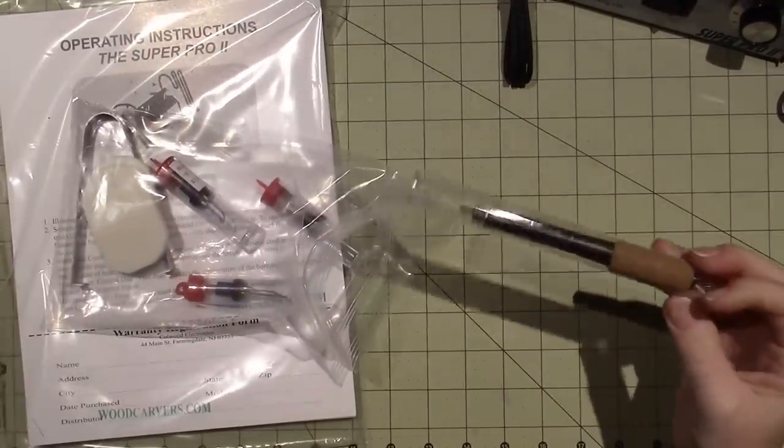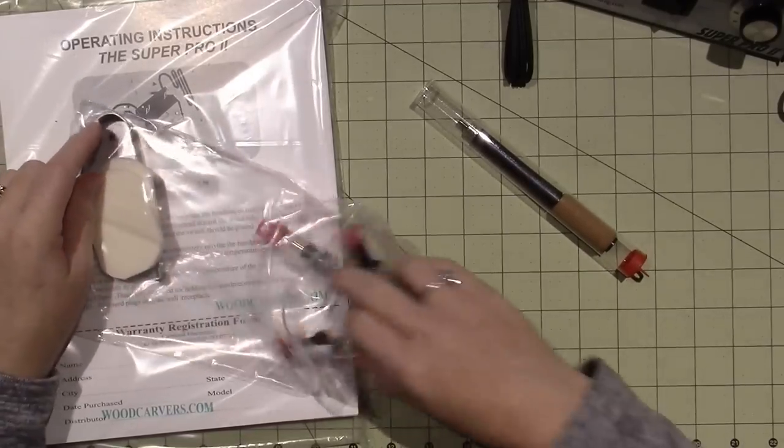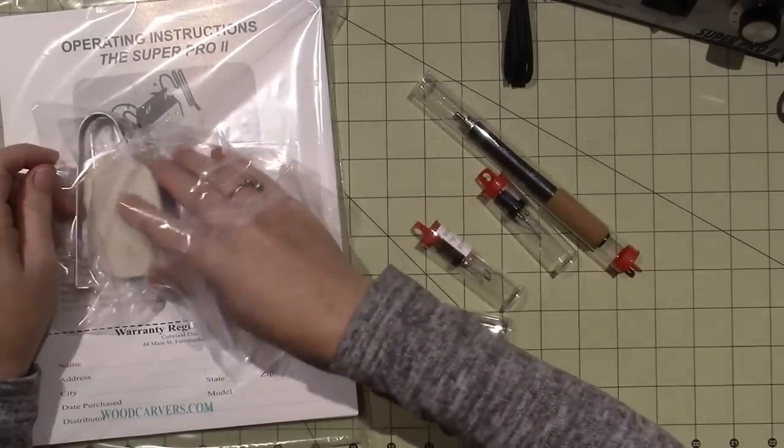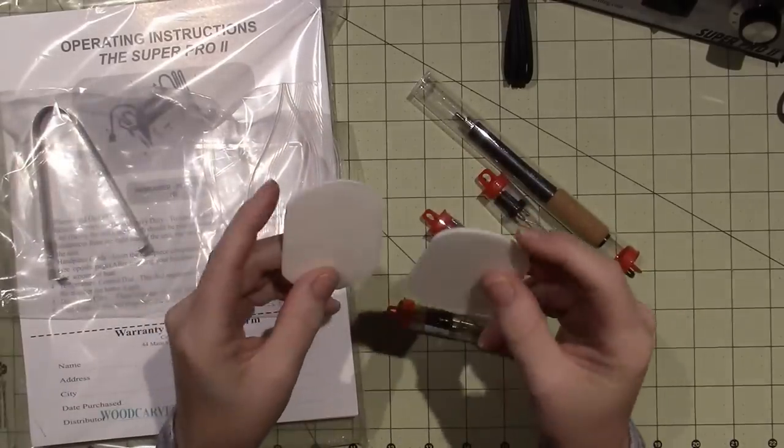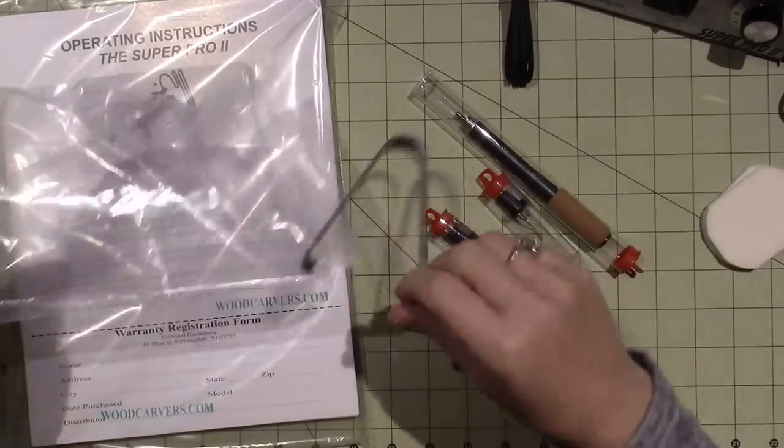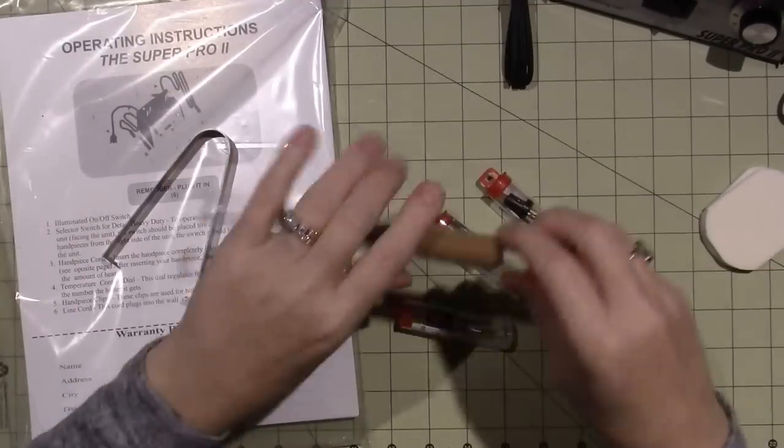It came with one pen and three different tips. Yeah, there's no tip on there right now. It also came with little sanding blocks that you clean the tip with, and this little tool that you remove the tips from the pen with.